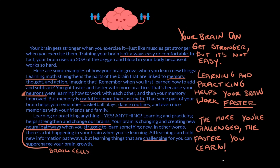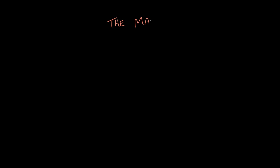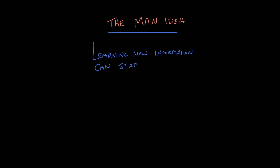So here are my paragraph summaries: your brain can get stronger, but it's not easy; learning and practicing helps your brain work faster; and the more you're challenged, the faster you learn. Putting those three things together, I would say the main idea of this passage is that learning new information can strengthen your brain. What I did was I took something from each paragraph and found what they all had in common. Details about math or dance practice are important but aren't so important that they need to be included in the main idea — all of that can be pushed into this broader idea that learning new information makes your brain stronger.